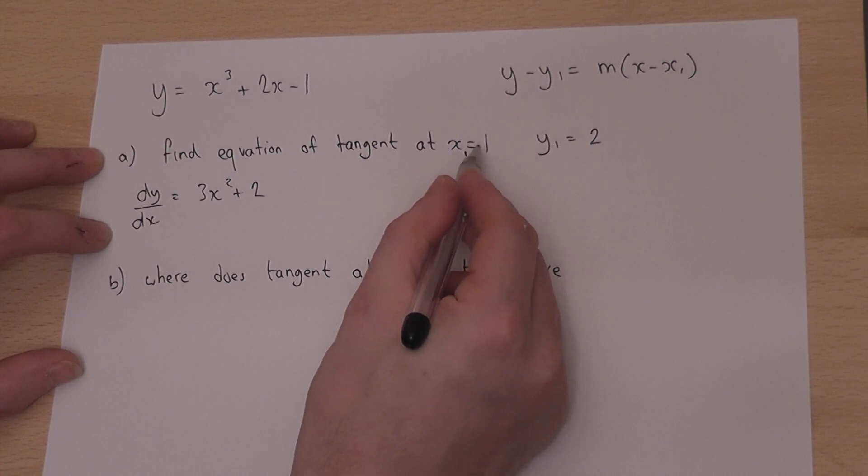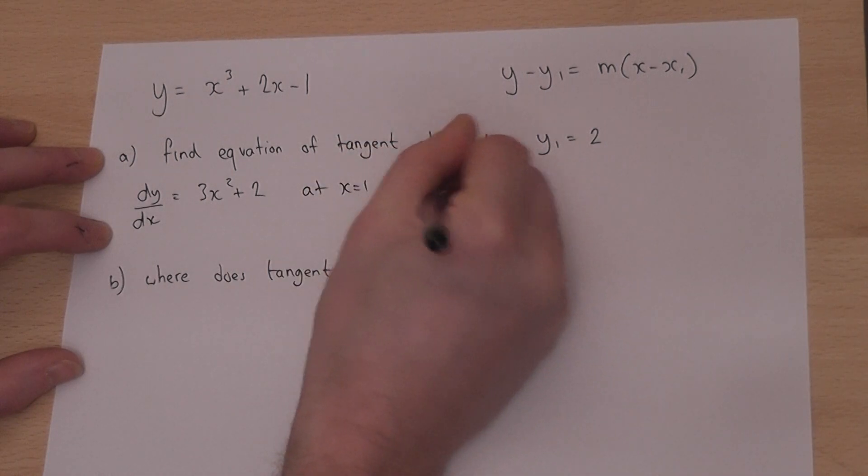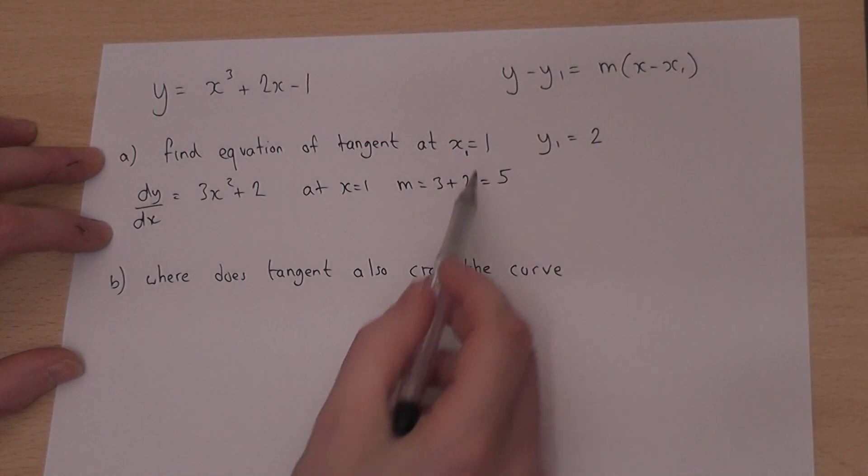And if I let x equal 1, then the gradient at x equals 1 is 3 times 1 squared is 3, plus 2 equals 5.